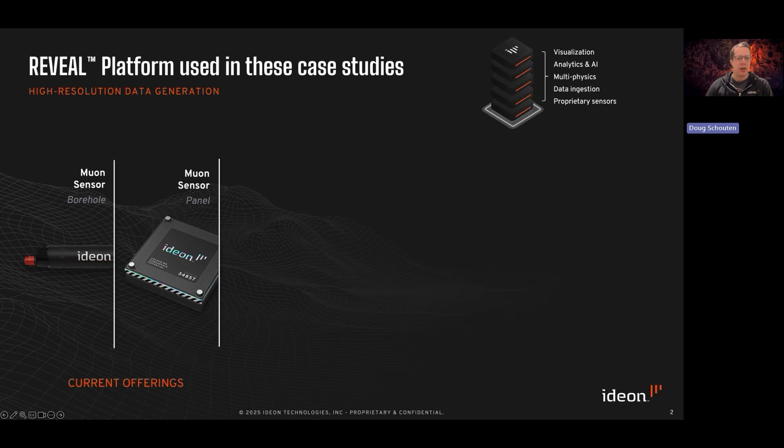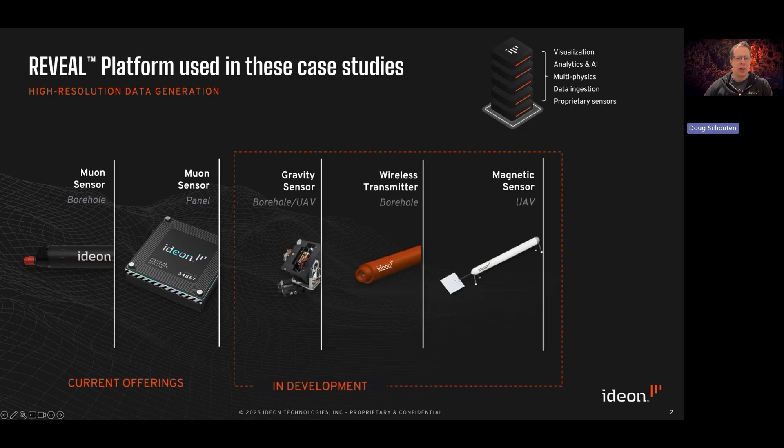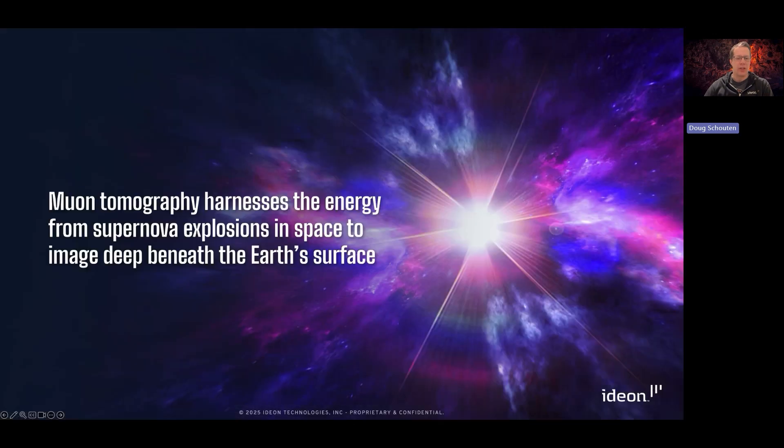Leveraging our borehole and panel muon detectors, and then looking forward, our UAV-hosted gravimetry and vector magnetometry. Focusing in on the muon tomography technology, we harness the energy from supernova explosions in space to image deep beneath the Earth's surface.